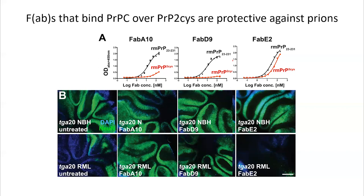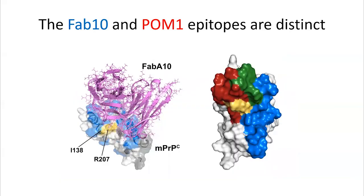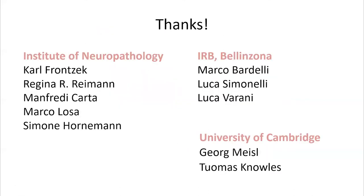On another occasion I will describe the downstream events — we already have a pretty clear idea of what happens. Regarding FAB A10's epitope mapped by NMR: the surface of the prion protein touching FAB A10 covers where the H-latch occurs. Notably, the binding site of POM1 and the binding site of FAB A10 are completely different, yet both are neuroprotective — indicating we are not simply talking about steric hindrance, which is for me very important.